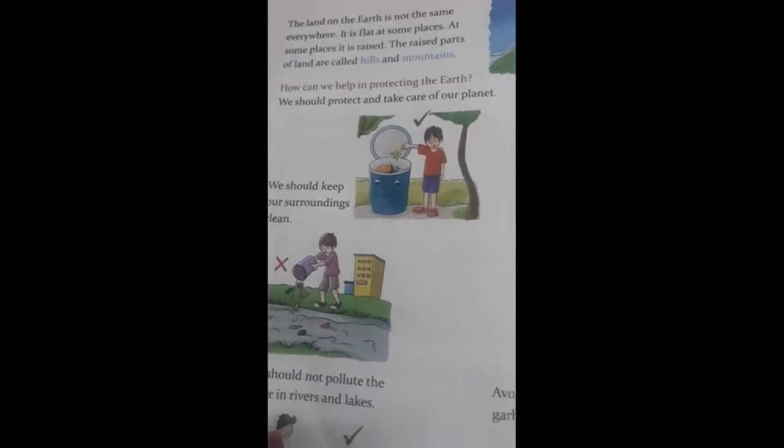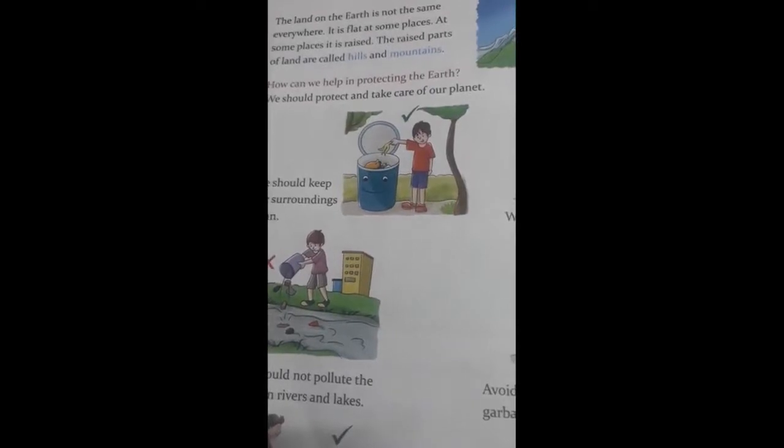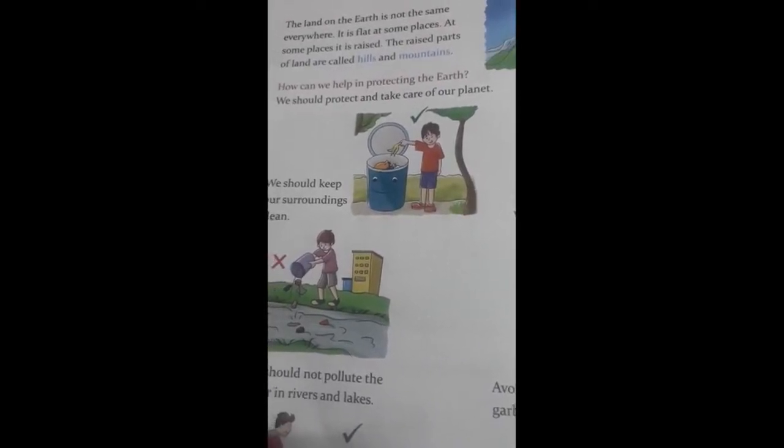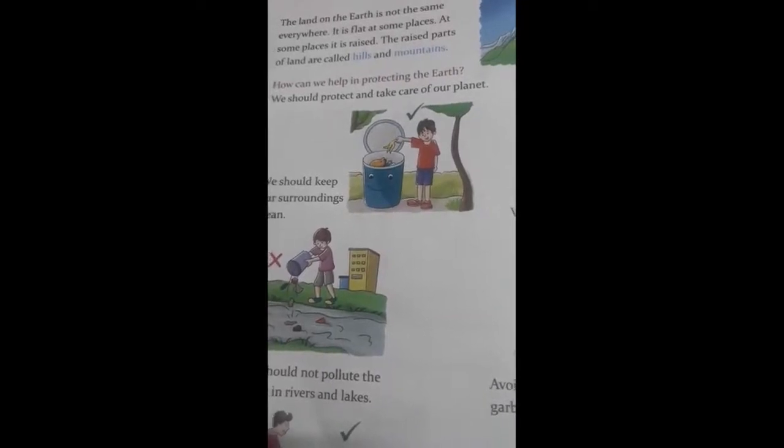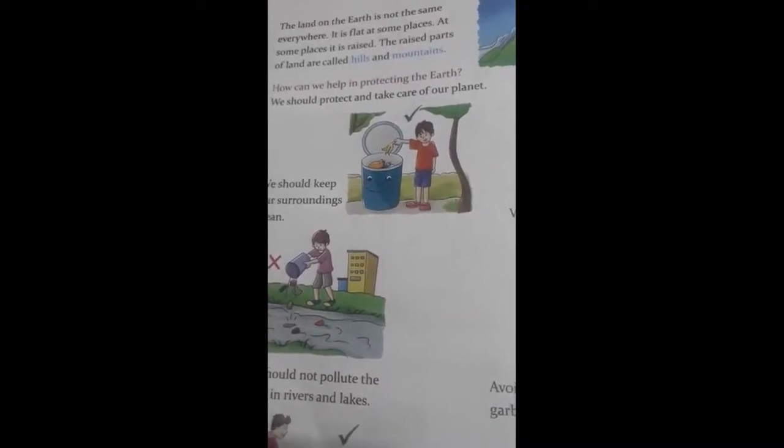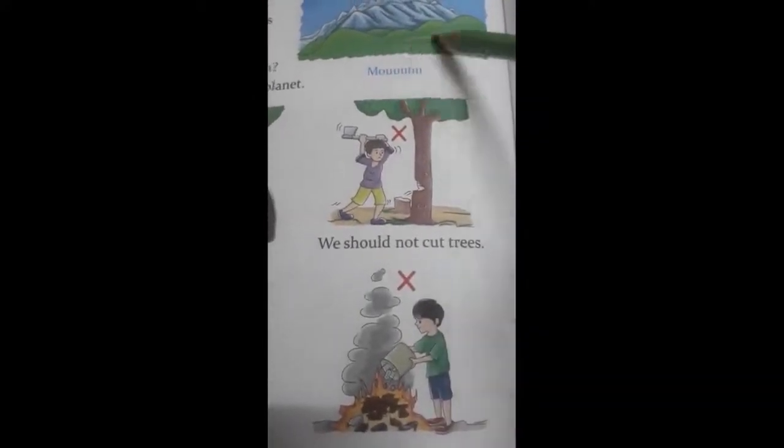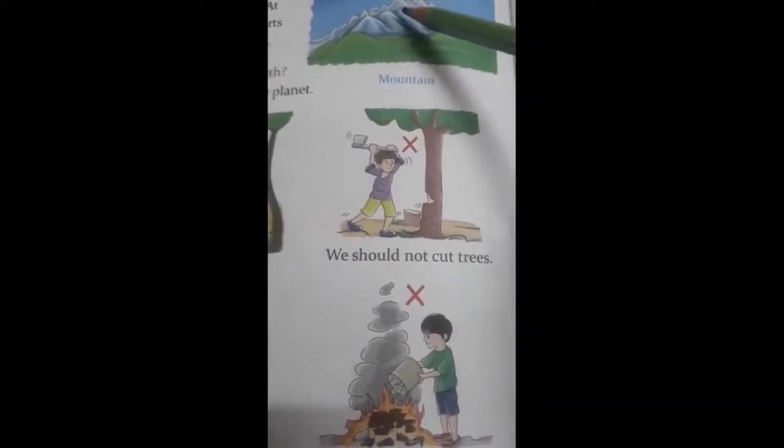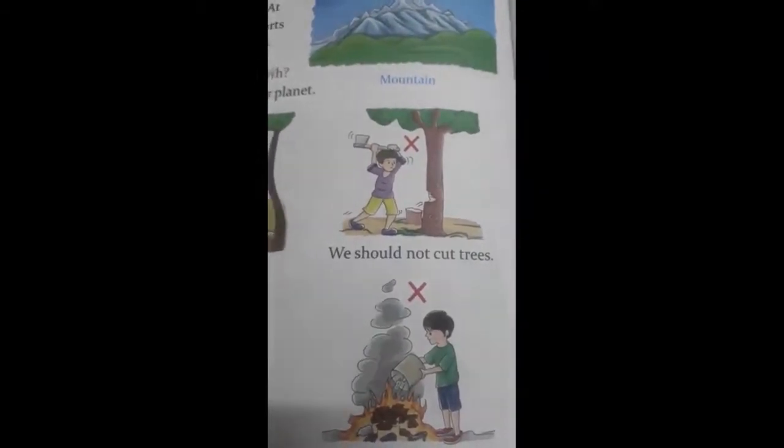The land on the Earth is not the same everywhere. It is flat at some places. At some places it is raised. The raised parts of land are called hills and mountains. Now you can see, this is plain area and this is hills and mountains, raised area.